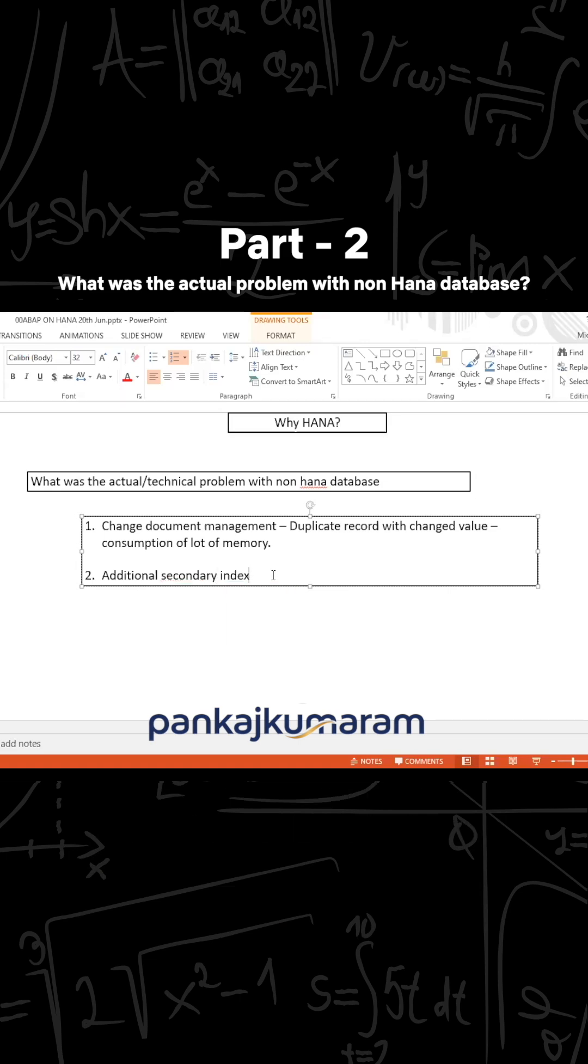We create the secondary index in order to improve the performance for a field if that field is not a primary field, if that is a non-key field.